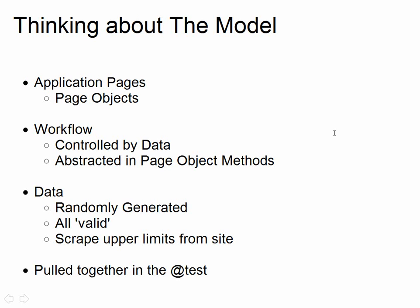Thinking through the model we need here: we'll have page objects that abstract away the actual implementation, dealing with all the locators and fields in place. I'll use them to find out what values are on the page. We've got a workflow where we can go back and forwards between pages, and this is ultimately controlled by the data I decide to put in, because some fields are dependent on other data. We make different decisions based on the data coming through, and we can abstract that away in page object methods. We can randomly generate the data — all I really want is valid data to make sure the system is viable to be tested manually. If anything fails, the system is not ready. And we can scrape a lot of this from the site. We pool these different models together in the test — that's where it all comes together.